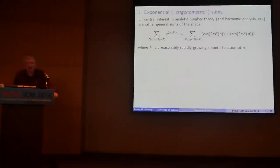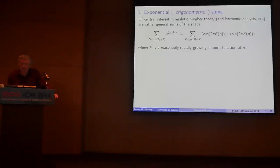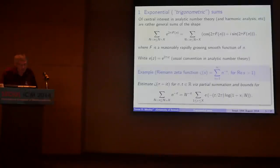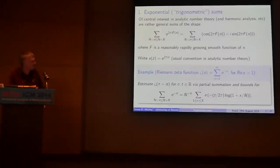Let me introduce the topic with a bit of background. Why are we interested in exponential sums? Well, classically these were referred to as trigonometric sums, and it really goes back to studying Fourier series. These are very much of interest in analytic number theory — there are many analytic number theoretic functions which you can approximate by Fourier series. A basic example is the Riemann zeta function. In this subject we always write e(z) as e to the 2πiz to save clutter.